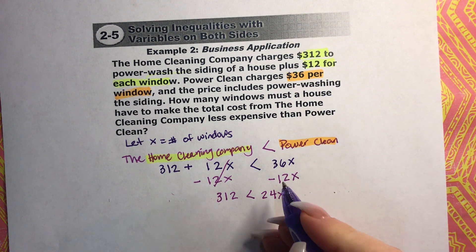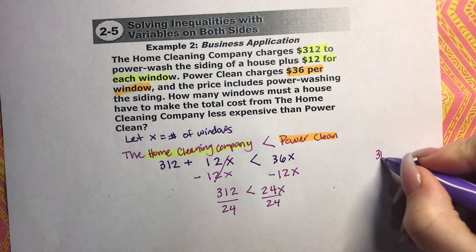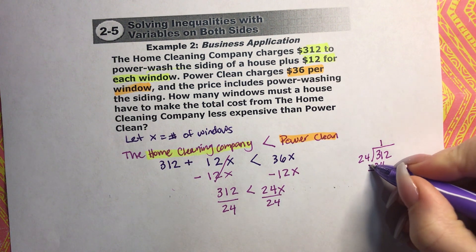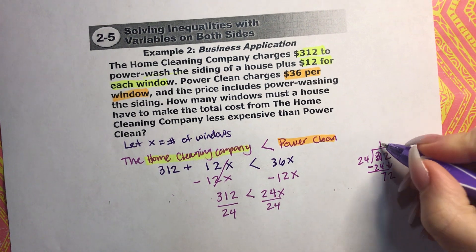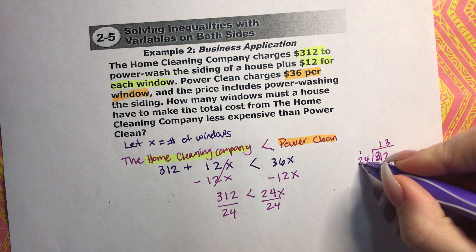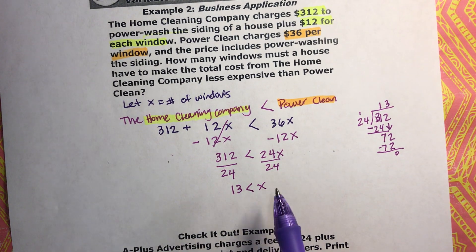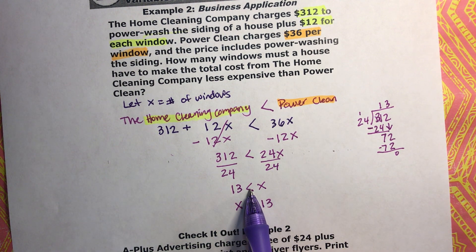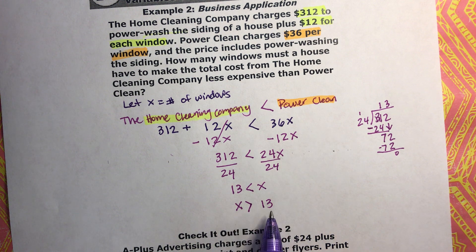We just need to divide both sides by 24. Working that out on the side: 24 goes into 312 thirteen times — 24 goes into 31 once, remainder 7, bring down the 2 to get 72, and 24 goes into 72 three times with no remainder. So 312 divided by 24 is 13. Writing the answer with the variable on the left: when you swap sides, the alligator sign must keep eating X, so X is greater than 13.